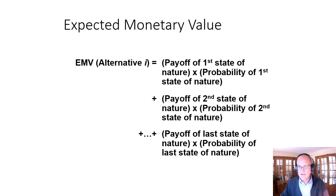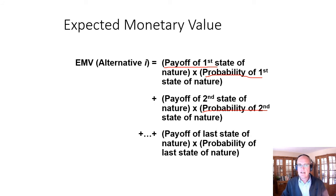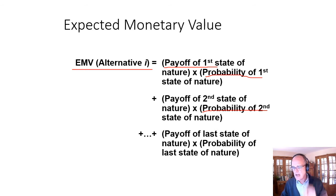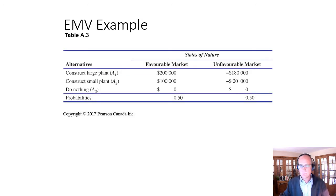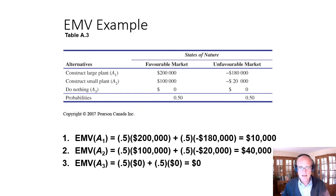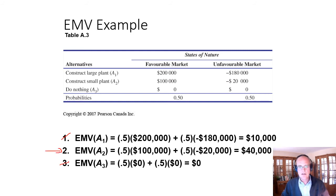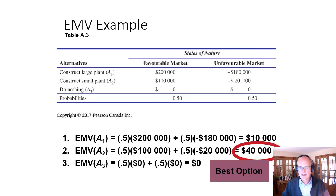The expected monetary value is the probability of the first state of nature times the payoff, plus the probability of the second state of nature times the payoff, plus however many additional states of nature there are — with all probabilities summing to one. You get a weighted average expected monetary value for that uncertain outcome that allows you to go back and make a choice. With equally likely probabilities we had $10,000, $40,000, and zero — so we would cut the other two branches and make a choice for constructing a small plant.